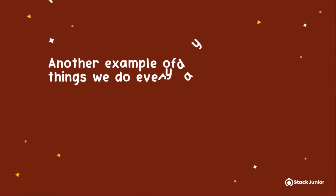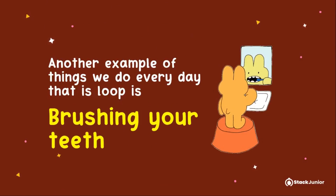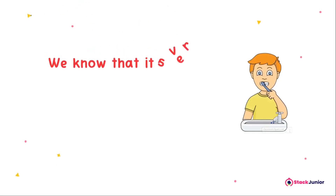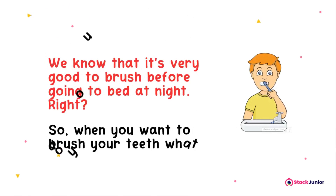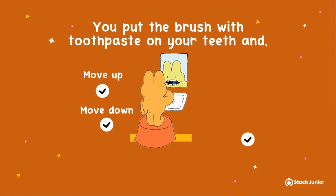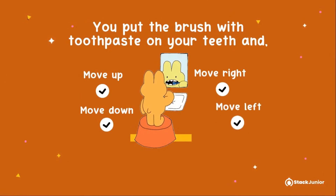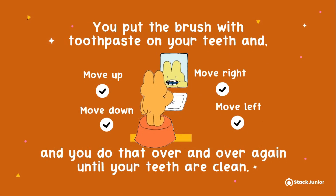Another example of things we do every day that is a loop is brushing your teeth. It's very good to brush before going to bed at night, right? So when you want to brush your teeth, you put the brush with toothpaste on your teeth and move up, down, right, and left. And you do that over and over again until your teeth are clean.